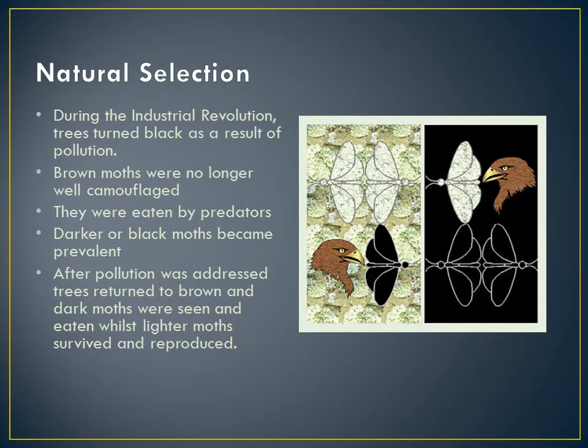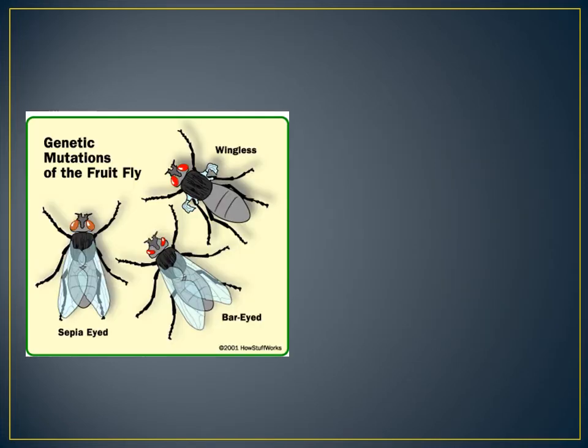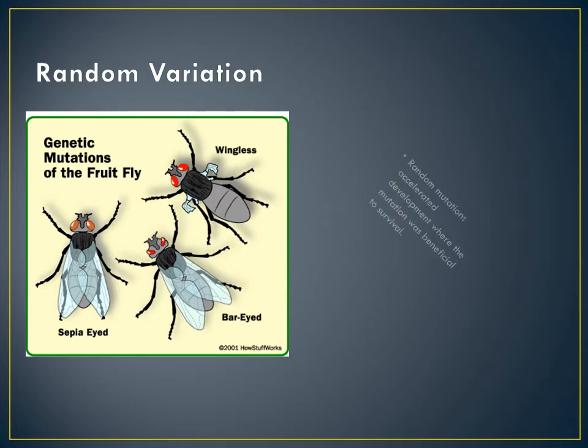The ability of a species to adapt to a changing environment is the key to success of that species. Random variation is another feature of evolutionary theory explored by Darwin, in that he pointed out how random mutations could accelerate the process of development when it helped survival.